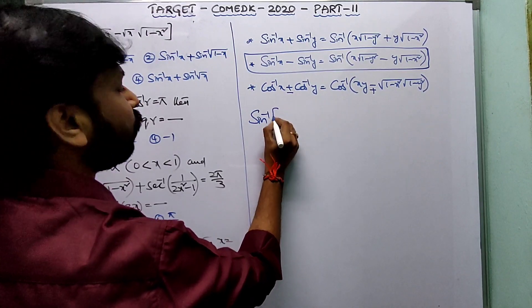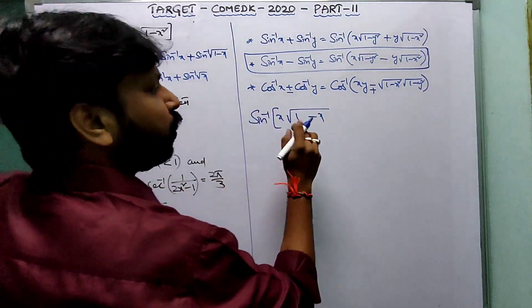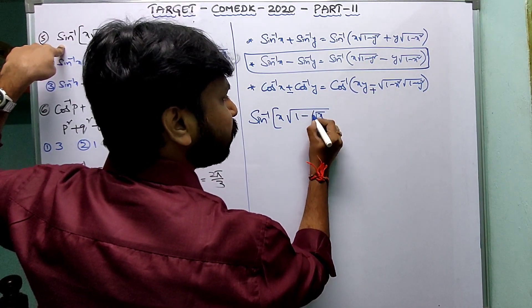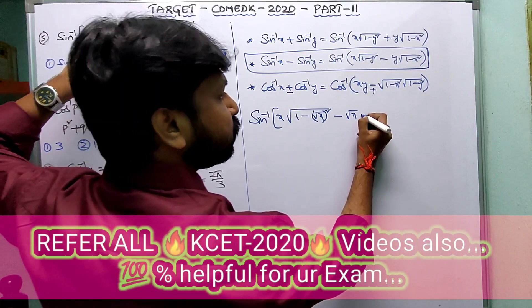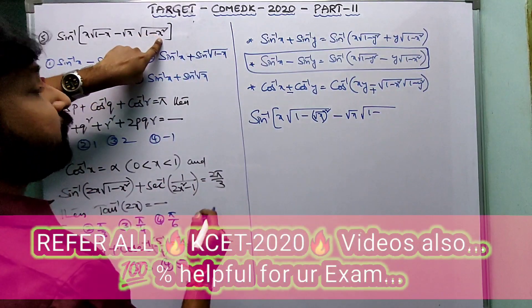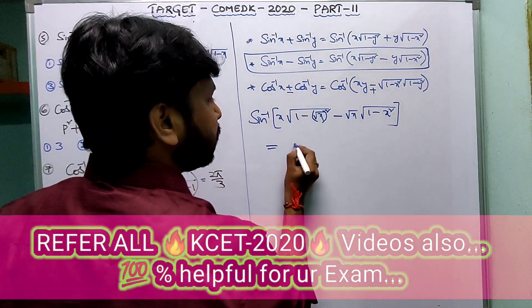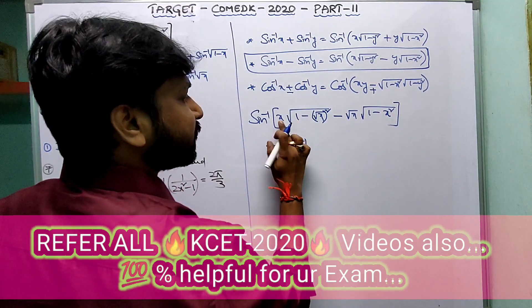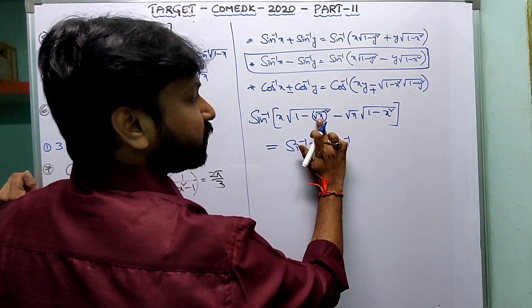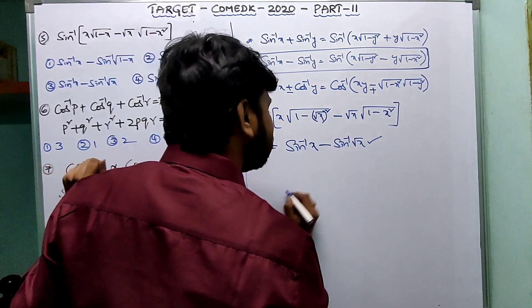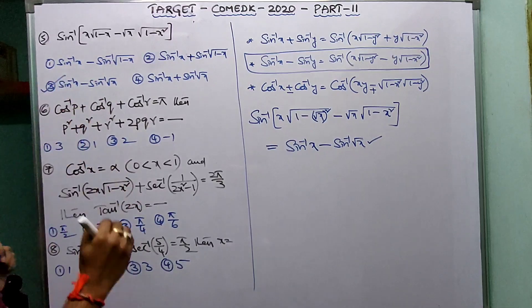Looking at sin⁻¹(x·√(1-y²) - y·√(1-x²)): the expression has (1-x) not (1-x²), so convert: √(1-x) = √(1-(√x)²). This means y = √x. So the expression equals sin⁻¹x - sin⁻¹(√x). The third option is correct.